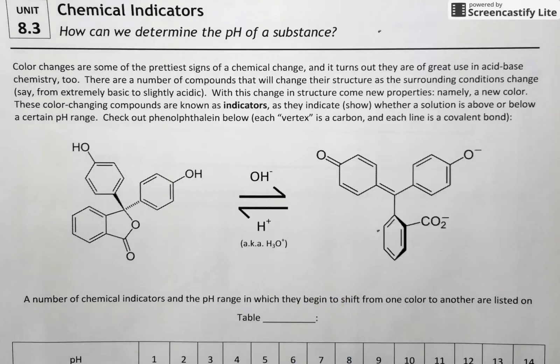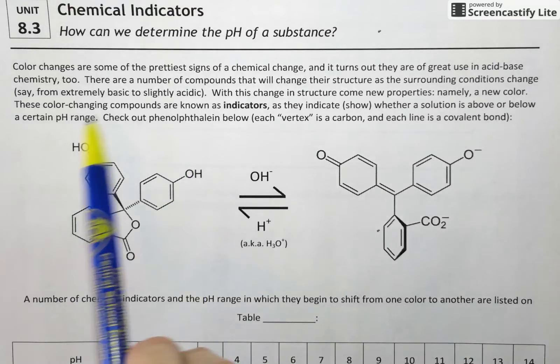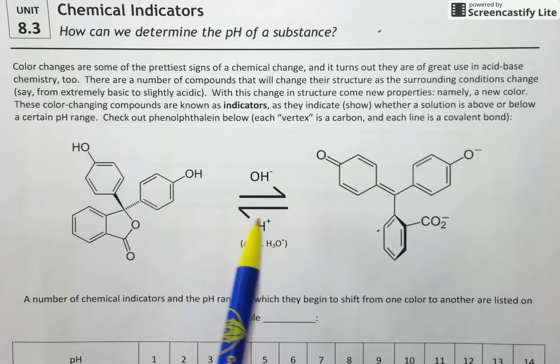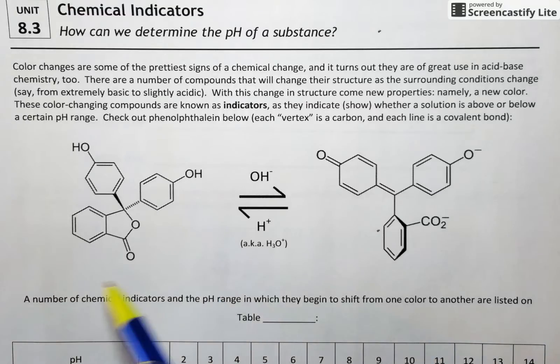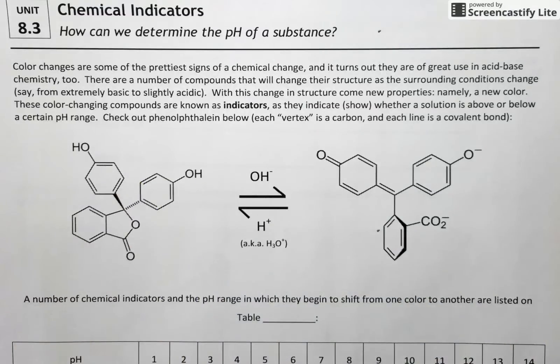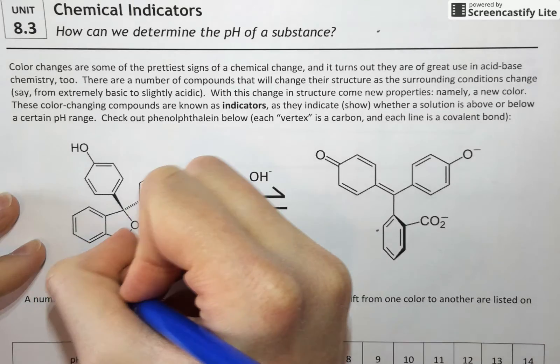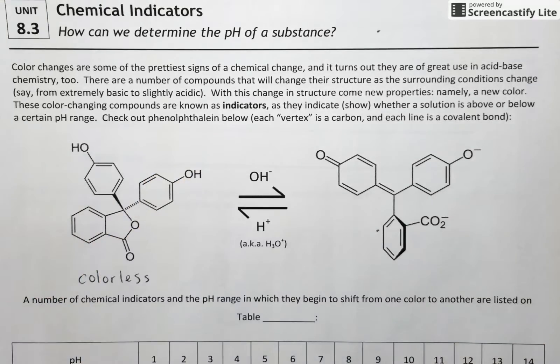So this ugly looking thing right here is actually an example of a chemical indicator and it's called phenolphthalein. All these little vertices here are actually carbon atoms bonded to one another and also some unwritten hydrogens. What you're looking at is the fact that phenolphthalein structure looks like this when we're in a solution that has a relatively high concentration of H+, aka an acid. And this particular structure gives phenolphthalein absolutely no color at all. So this is a wholly colorless aqueous solution.